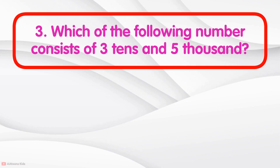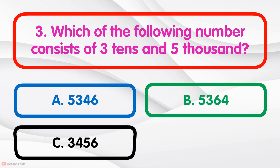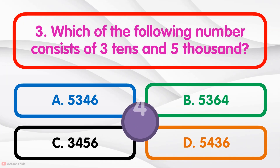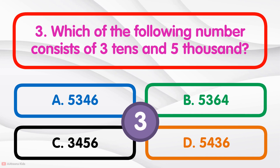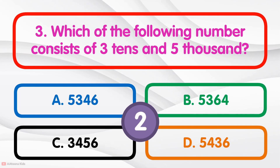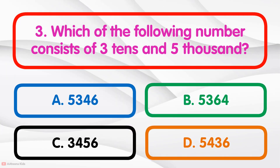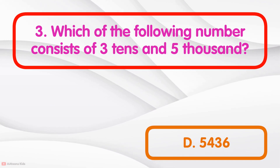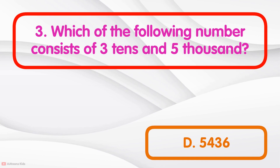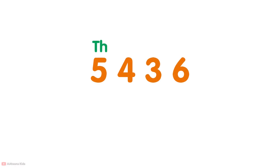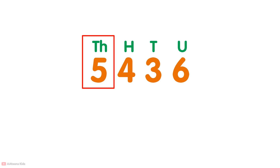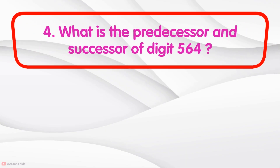Which of the following number consists of three tens and five thousands? Five thousand four hundred thirty-six contains three in the tens place and five in the thousands place. Five is in the thousands place, four is in the hundreds place, three is in the tens place, and six is in the units place.